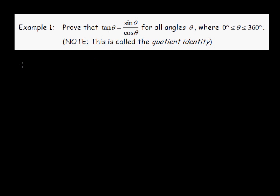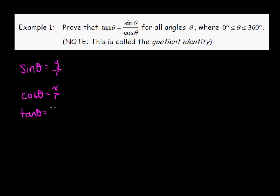For the first two examples, we want to keep in mind that sine theta equals y over r, cosine theta equals x over r, and tangent theta equals y over x — the x, y, and r values in the Cartesian plane. We'll need those for the basic ones we're going to prove, but after that we won't need them for trig identities anymore.